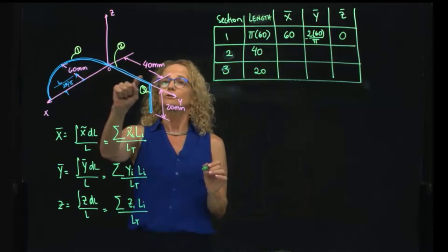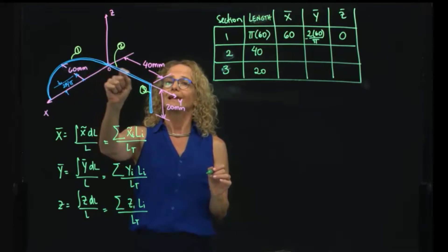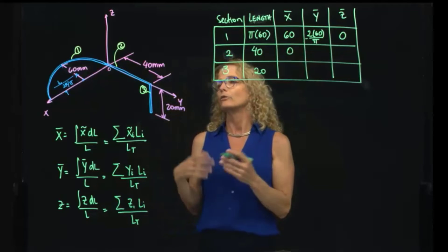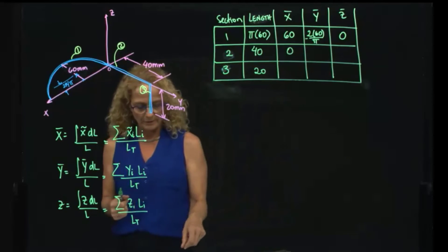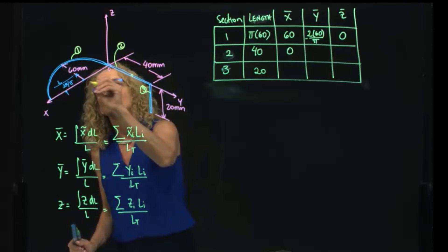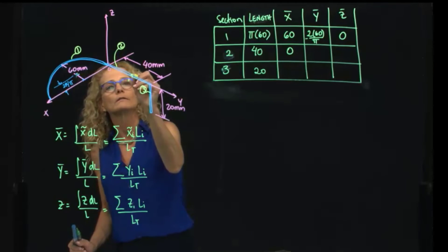For the second section, you see that this is over the y axis. Therefore, we have no distance in x, so no coordinates, because we have here that that centroid will be located right here. So this is the first centroid, and this is the second centroid, and this is the third centroid.